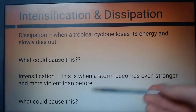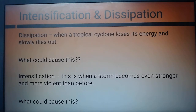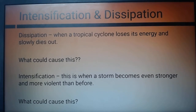Intensification is the exact opposite of dissipation. What could cause it? Number one: longer time spent over warm oceans — the longer a hurricane spends over warm oceans, the more powerful it becomes. And one more: perfect wind conditions. If the storm has really good wind conditions, it will be able to grow in size and move even faster. These are important terms for our next lesson on the impacts of storms.